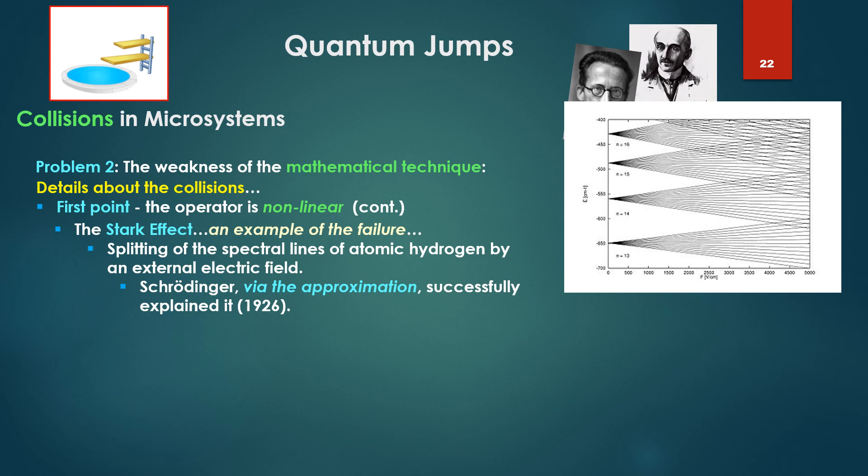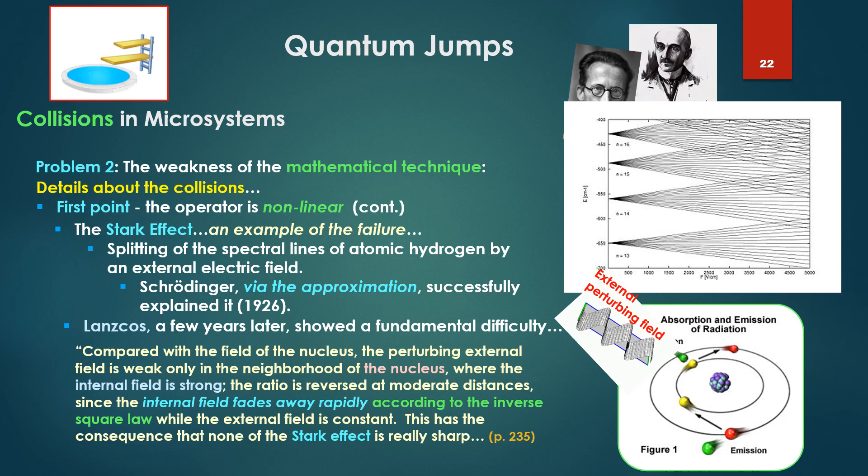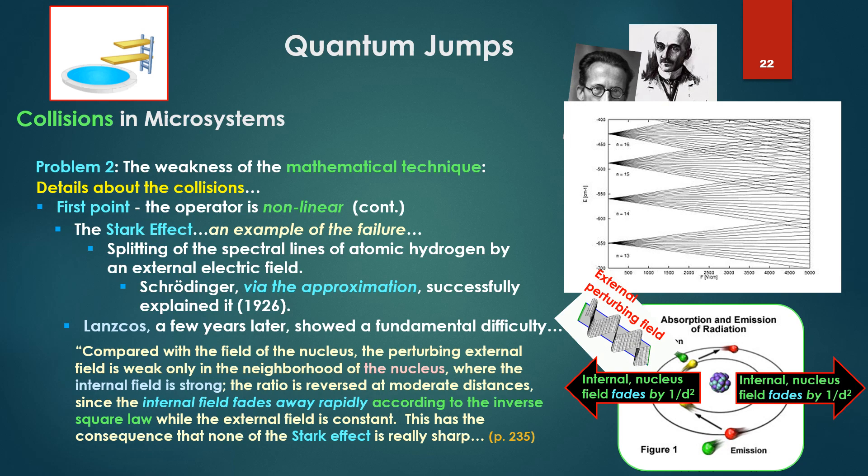The operator is called small, but properly this applies only to the change. This may vary in various parts of the field. The effect of the operator. For example, take the Stark effect, an example of this failure, splitting the spectral lines of atomic hydrogen by an external electric field. Schrödinger, via the approximation he's describing, successfully explained it in 1926, but he says Lanczos, later on, a few years later, showed a fundamental difficulty. Compared to the field of the nucleus, the perturbing external field is weak only in the neighborhood of the nucleus, where the internal field is strong. The ratio is reversed at moderate distances. Since the internal field fades away rapidly according to the inverse square law, 1 over the distance squared, while the external field is constant, this has the consequence that none of the Stark levels are really sharp.